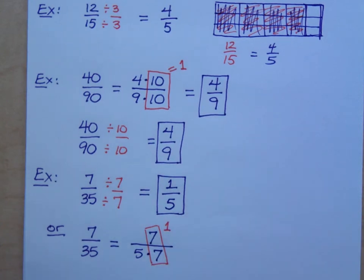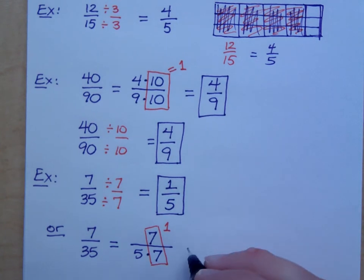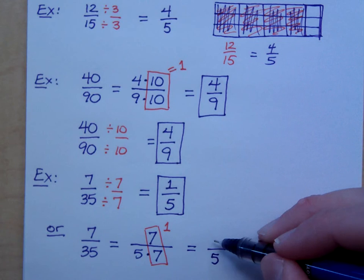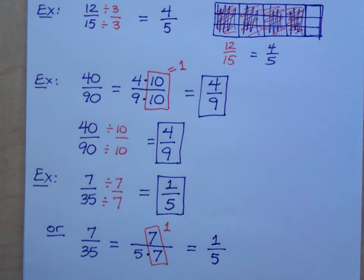Now, is 1 a number that just goes away like 1 doesn't matter? No. So, you have left a 5, but the 5 was in the denominator, right? That's where that factor was located. And in the numerator, there's a 1 here. Now, you may say, I'm not sure I totally agree with you, Mr. Craig, and that's fine.